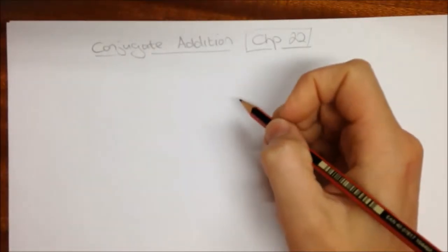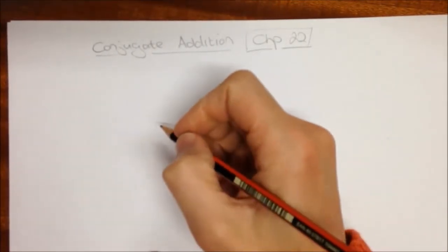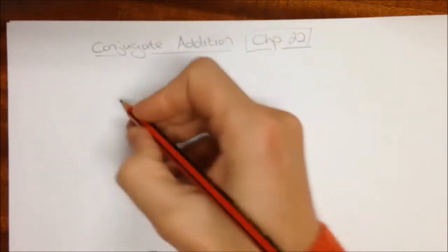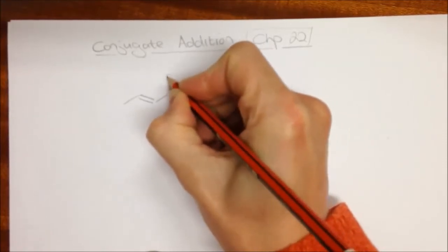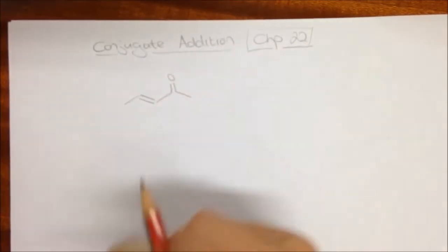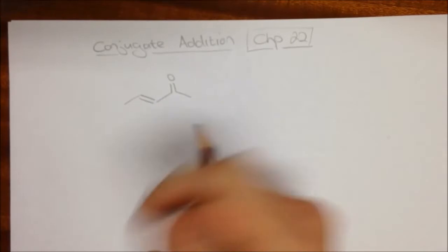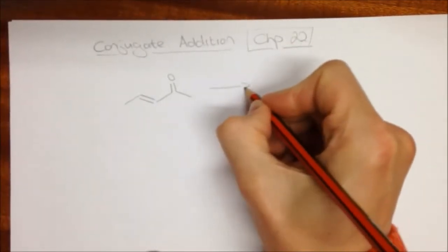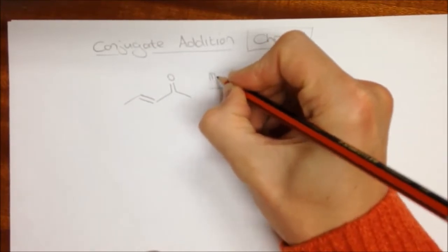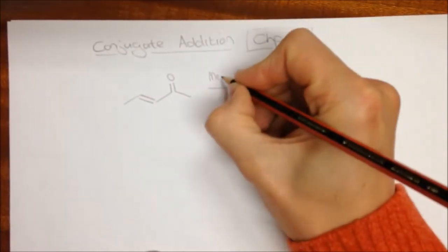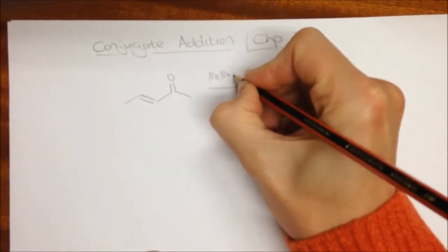So conjugate addition can best be explained this way. We'll start with a simple compound, which is an alpha-beta unsaturated ketone. Now you should know that if we take that alpha-beta unsaturated ketone and we react it with a Grignard reagent, such as methyl magnesium bromide, we know that the methyl group is a nucleophile.